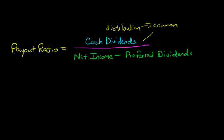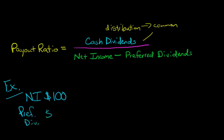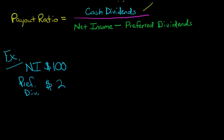So let's work through an example. In our example, let's say that a firm has net income in a period of $100, and then they have preferred dividends of $2. And then let's say that the dividends to the common stock shareholders, just the regular shareholders, the cash dividends, let's say that's $5.